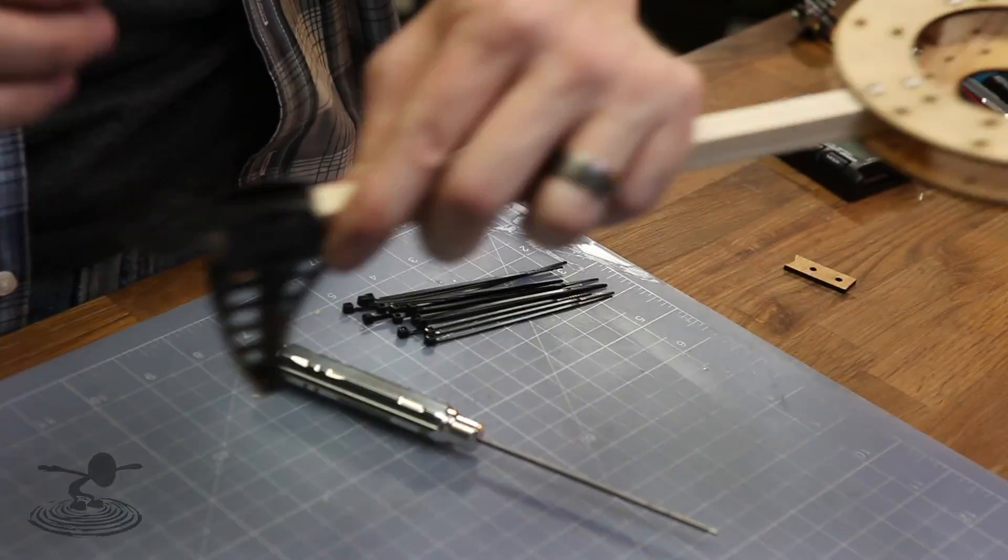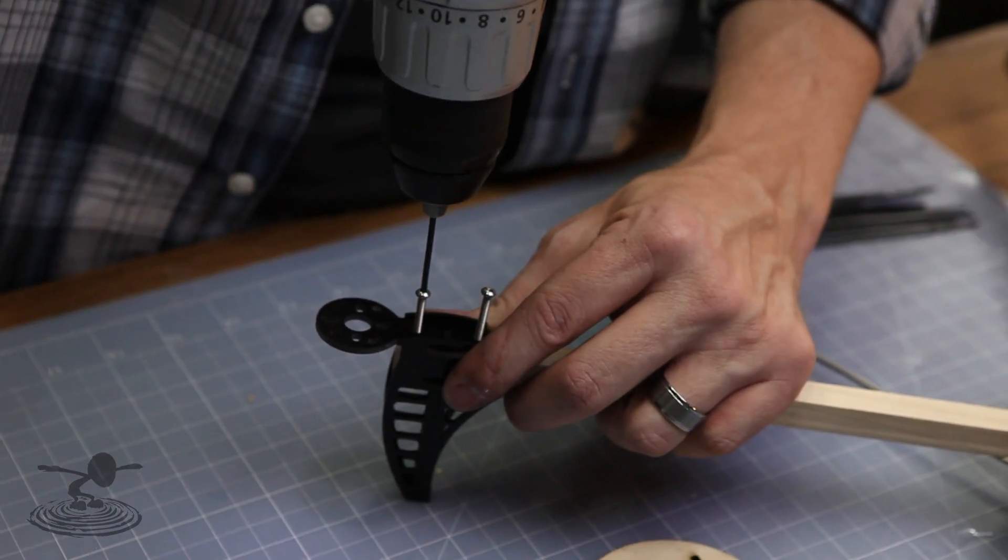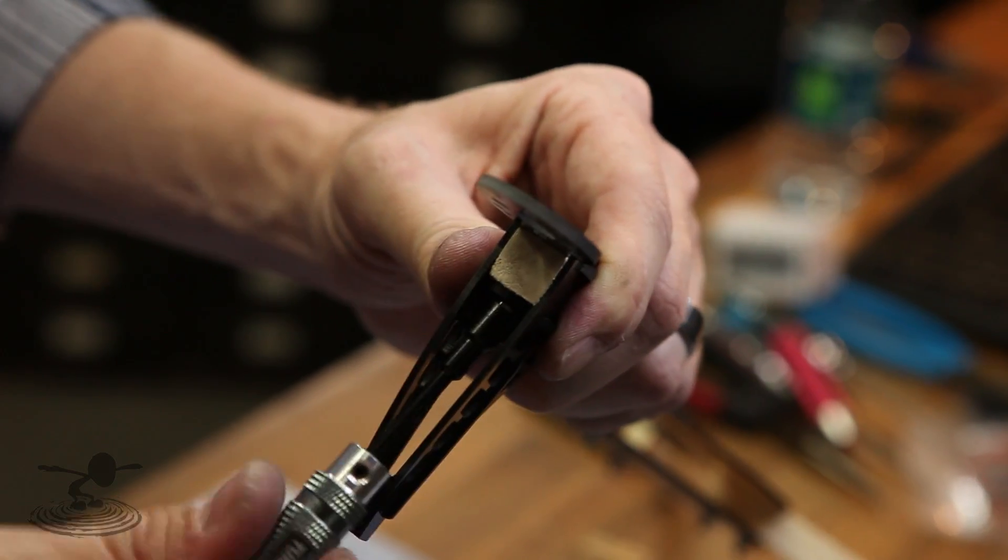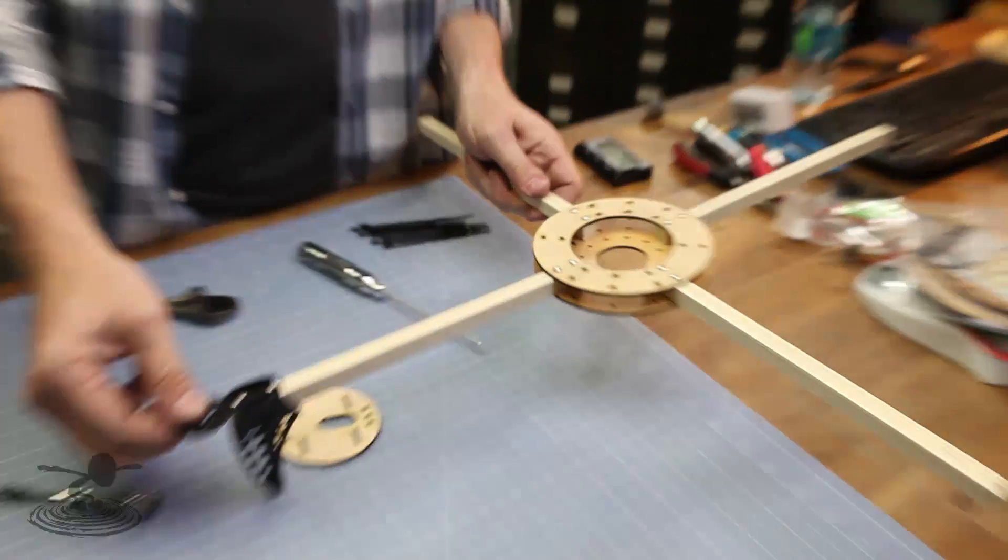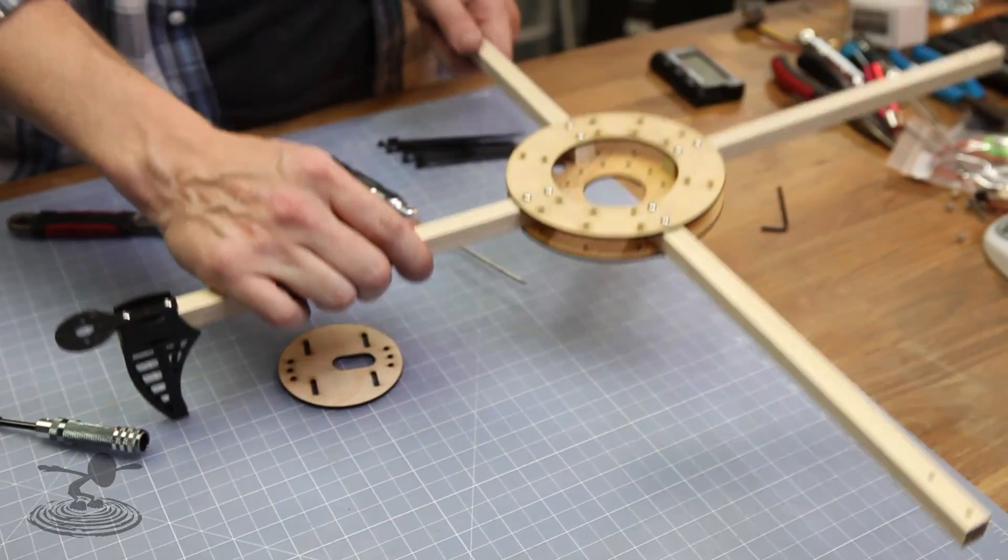So the next step is to add your landing gear motor mounts, which consists of just two more bolts or screws and lock nuts. So there's your motor mount and landing gear. Do that three more times and you'll have your basic airframe.